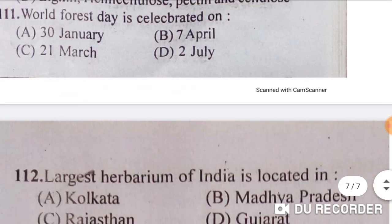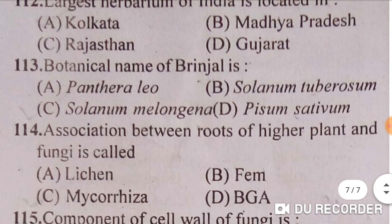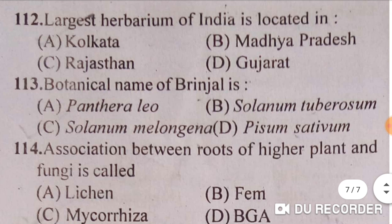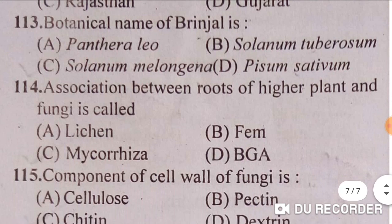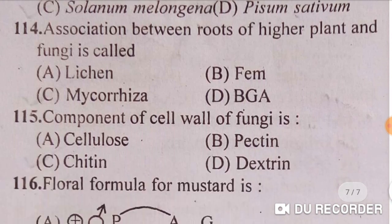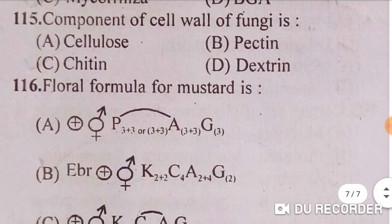World Forest Day is celebrated on 21st March — option C is correct. The largest herbarium of India is located in Kolkata — option A is correct. The botanical name of brinjal is Solanum melongena — option C is correct. The association between roots of higher plants and fungi is called mycorrhizae — option C is correct. The component of the cell wall of fungi is chitin — option C is correct.